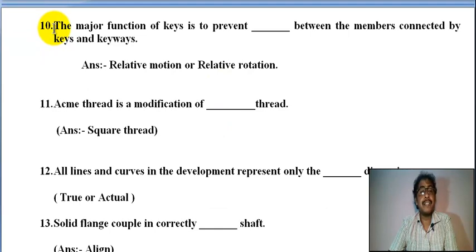Number ten: the major function of key is to prevent relative motion or relative rotation between the members connected by key and keyways.